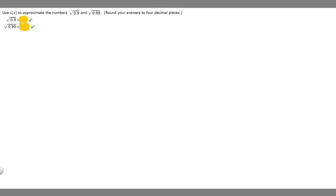In this problem we're told to use L(x) to approximate the numbers √0.9 and √0.99, and we're supposed to round our answers to four decimal places. In order to solve this problem, you need to know this formula: L(x) = f(a) + f'(a)(x - a).